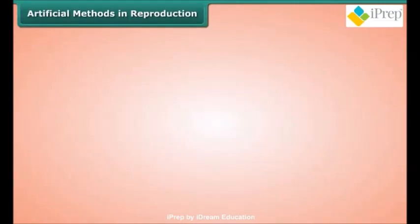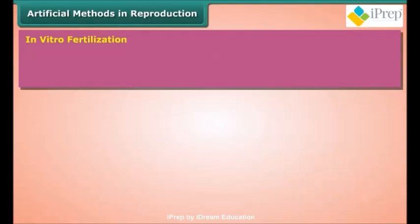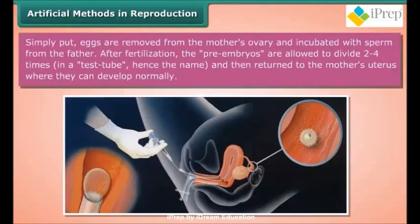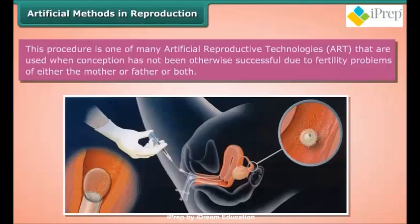In vitro fertilization (IVF): A test tube baby refers to a child conceived outside the woman's body — the process is called in vitro fertilization. Eggs are removed from the mother's ovary and incubated with sperm from the father. After fertilization, the pre-embryos are allowed to divide two to four times in a test tube and then returned to the mother's uterus to develop normally. This is one of many artificial reproductive technologies (ART) used when conception has not been successful due to fertility problems in either or both parents.